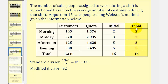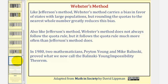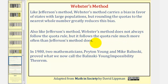So this is how Webster's method works. Like Jefferson's method, Webster's method carries a bias in favor of states with large populations. But rounding the quotas to the nearest whole number does greatly reduce this bias. Also like Jefferson's method, Webster's method does not always follow the quota rule, but it follows the quota rule much more often than Jefferson's method does.